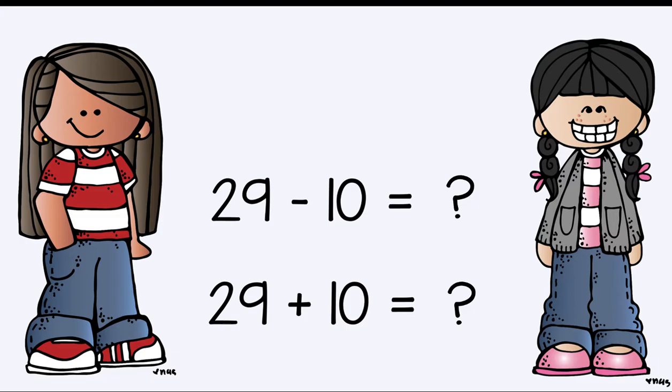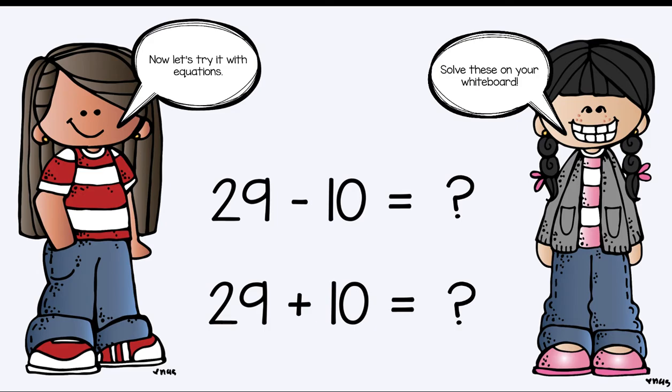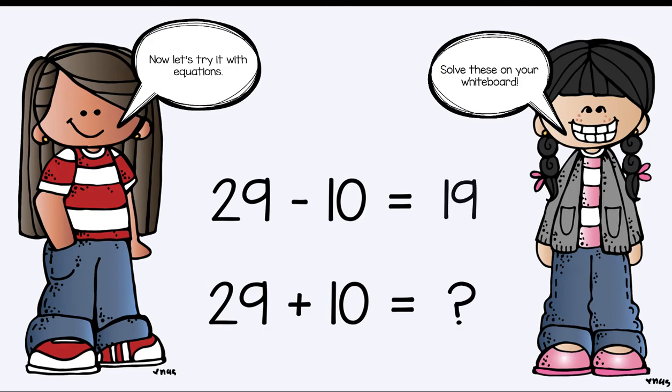Now let's try it with equations. 29 minus 10. Think about if you have 29 and you take away 10, what would that look like? Solve these on your whiteboard. You should get 19 for the first equation. And 39 for the second equation. Because you took 29 and you added 10. How did you do?